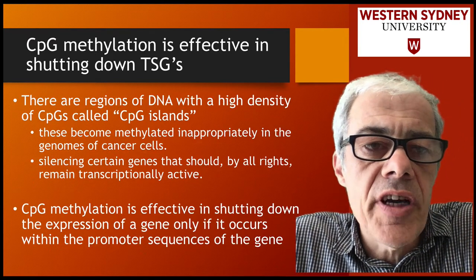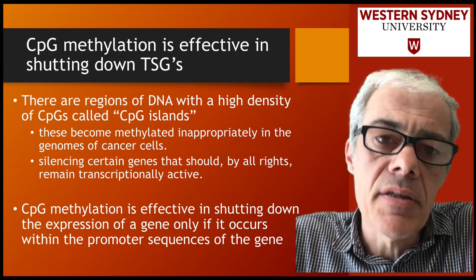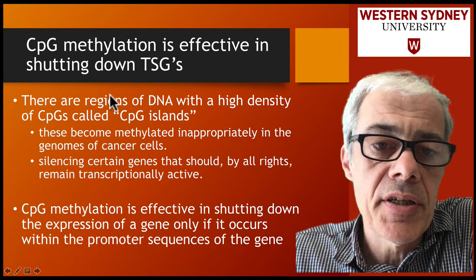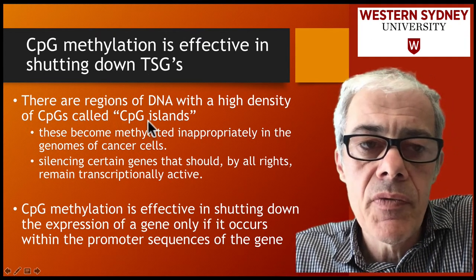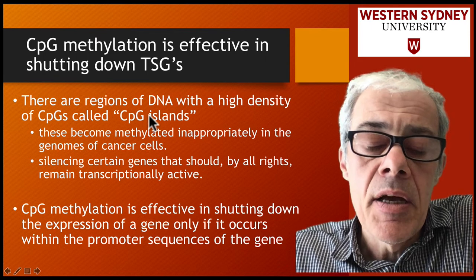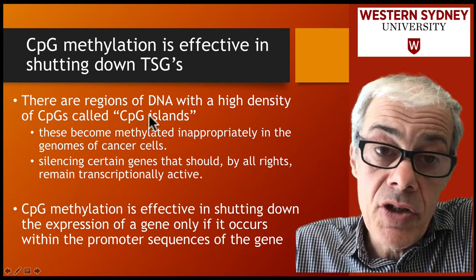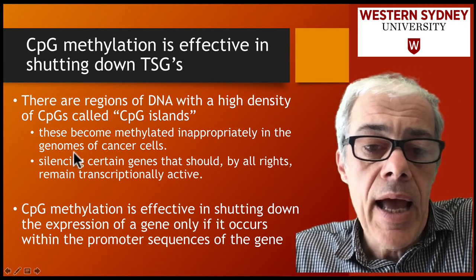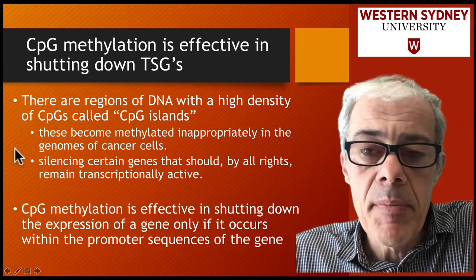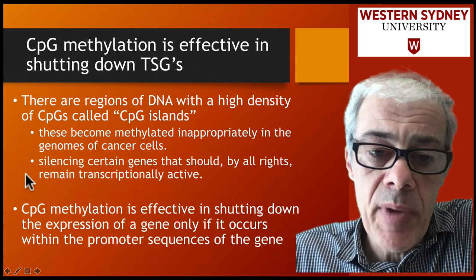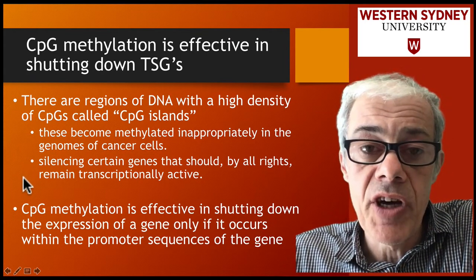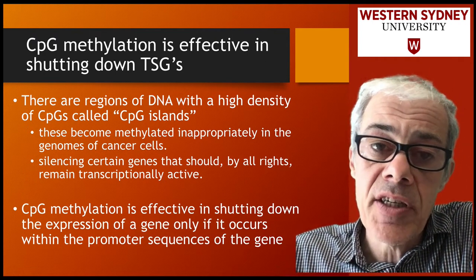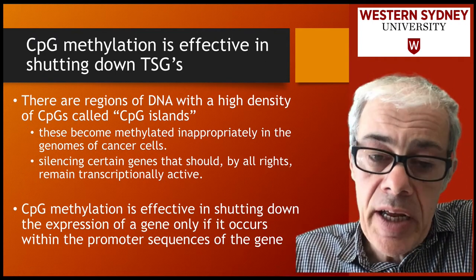In summary, methylation of CpG islands is effective at shutting down tumor suppressor genes. Within the promoters of tumor suppressor genes — particularly these genes — CpG islands become inappropriately methylated, which silences their promoters and turns off the expression of these important tumor suppressors. The absence of the suppressor leads to inappropriate growth.